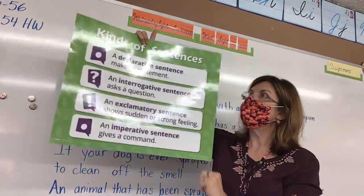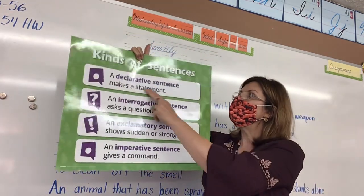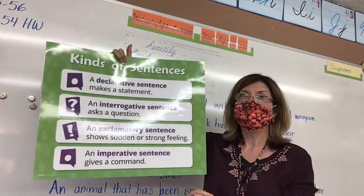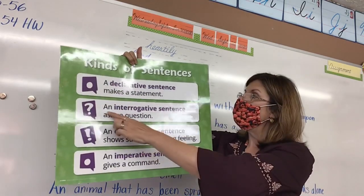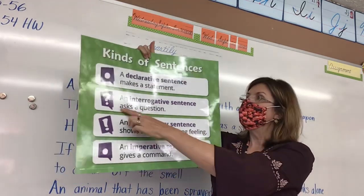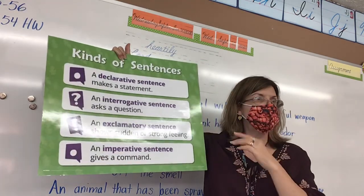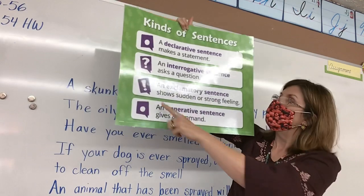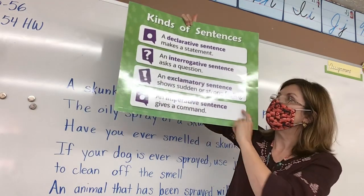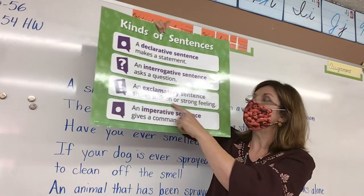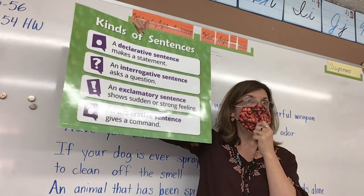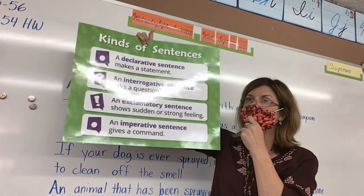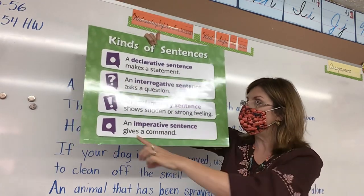What is a declarative sentence? It makes a statement — a telling sentence ends with a period. An interrogative sentence asks a question — an asking sentence ends with a question mark. An exclamatory sentence shows strong feelings — an exciting sentence ends with an exclamation mark.